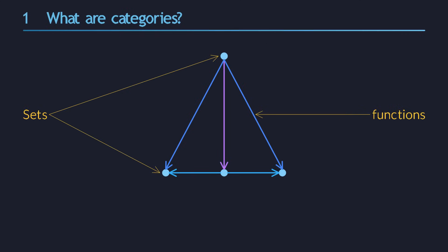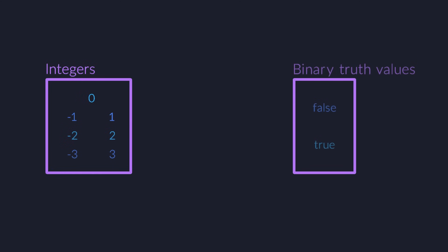Let's make things very concrete. I will use types as a specific example — we already talked about those in the previous video. Types are basically just sets of values with functions that take one input value and convert it into an output value. Here are two example types.